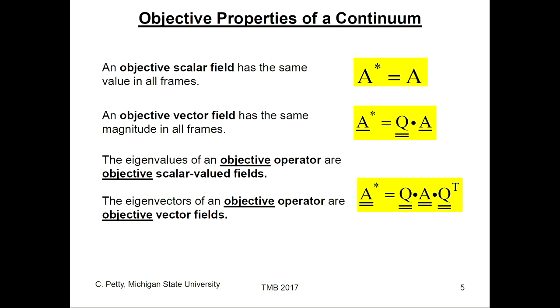An objective vector is one whose magnitude does not depend on the frame, but whose orientation does. If you have an objective dyadic-valued operator, then its eigenvectors and eigenvalues are objective scalars, and the eigenvectors are objective vector fields. So not everything is objective, but some things truly are.